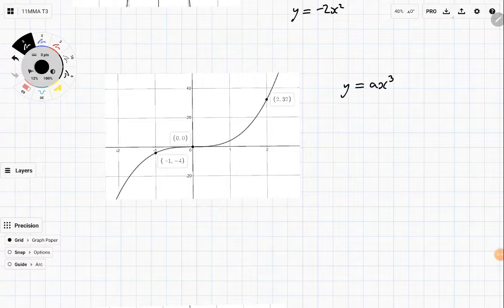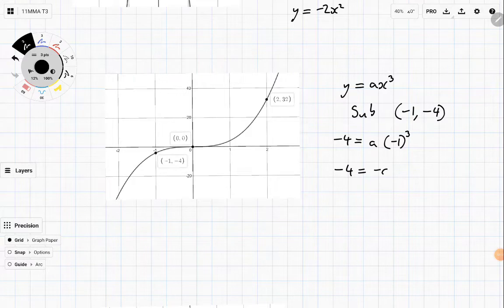For this one, sub in a point. Once again, I'm going to use the negative point just because of smaller numbers. -4 on the left-hand side, a × (-1)³. -1 to the power of 3 is -1, so we get -4 = -a. Negative on both sides and we get a = 4, which makes sense because this is an increasing function, so a should be positive.